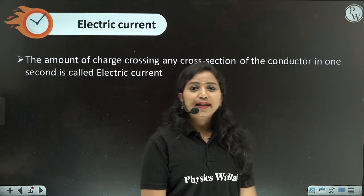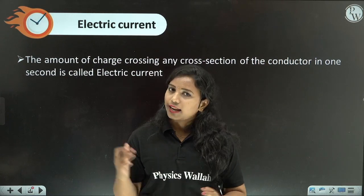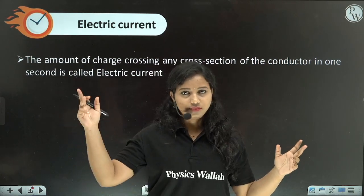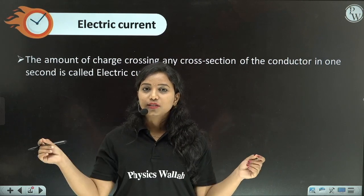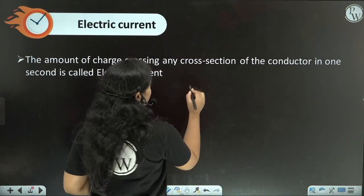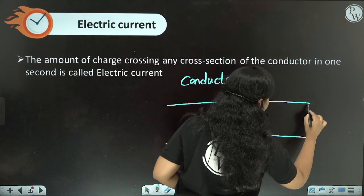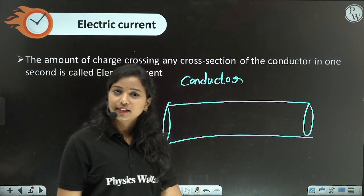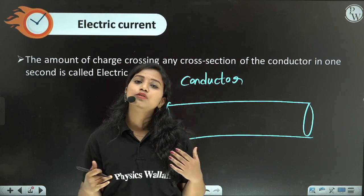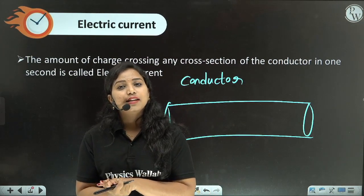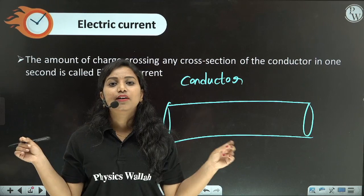Coming to electric current — before explaining, let me give a general example. At home, when you switch on a switch, the light turns on — there is a connection. From the switchboard to the bulb, you have a wire. That wire is a conductor. Conductors allow current to flow through them, and insulators do not allow current to flow. To connect the switch to the bulb, we use conductors, because conductors have a number of free charges.